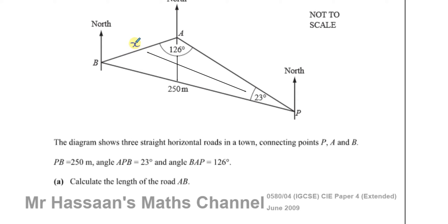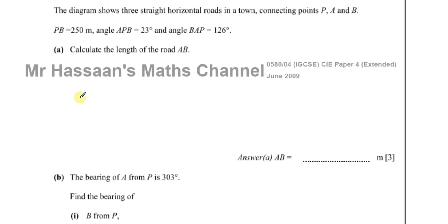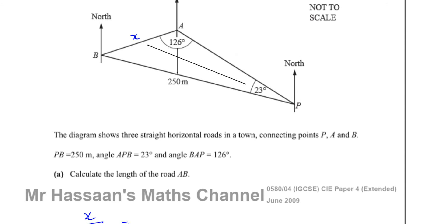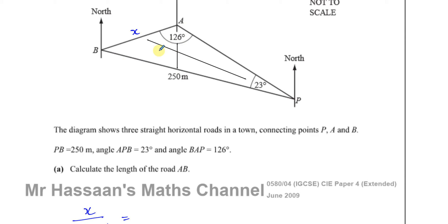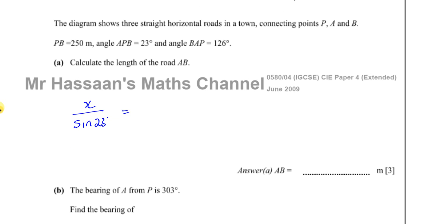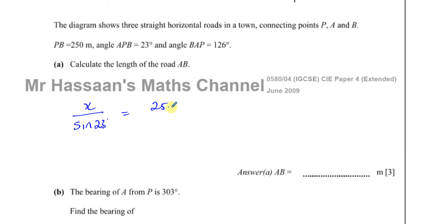So x divided by the sine of 23 will be the same value as 250 divided by the sine of 126. The length divided by the sine of the angle that's opposite that length.